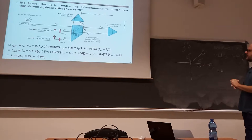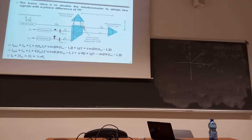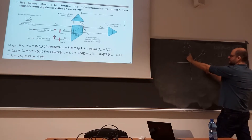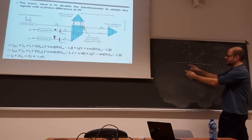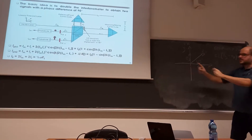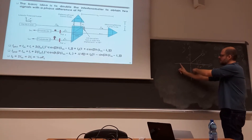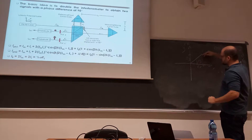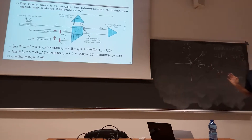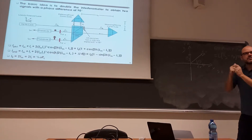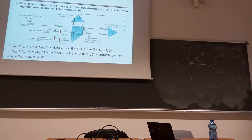Is the polarization state of the laser still linear or not? If I have two components that oscillate with the same phase, the polarization is linear, because these two components oscillate with the same phase and so the electric field is always oscillating in the same direction. But now if the component along x sees an extra path, is the polarization state the same or not?